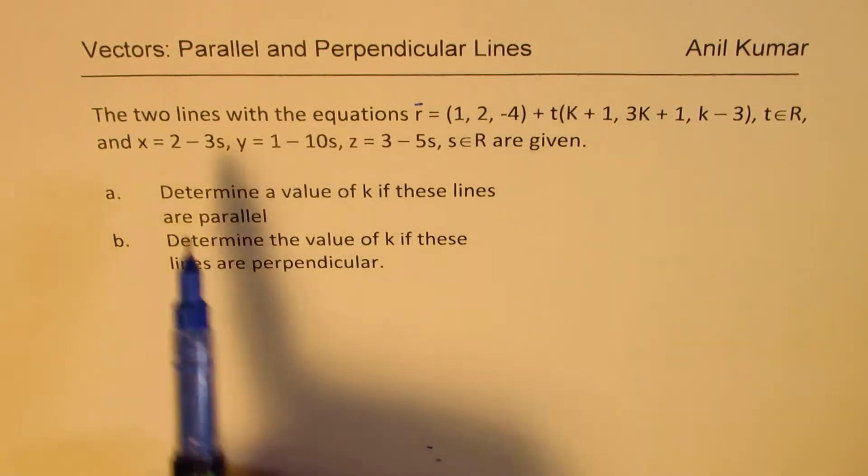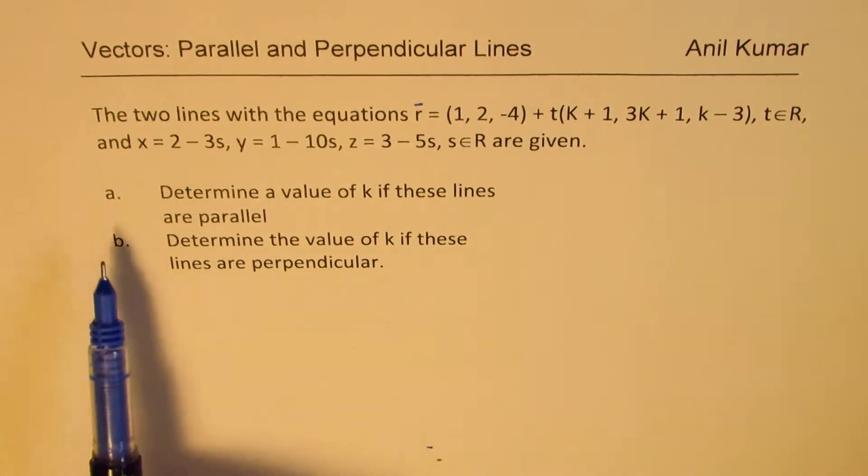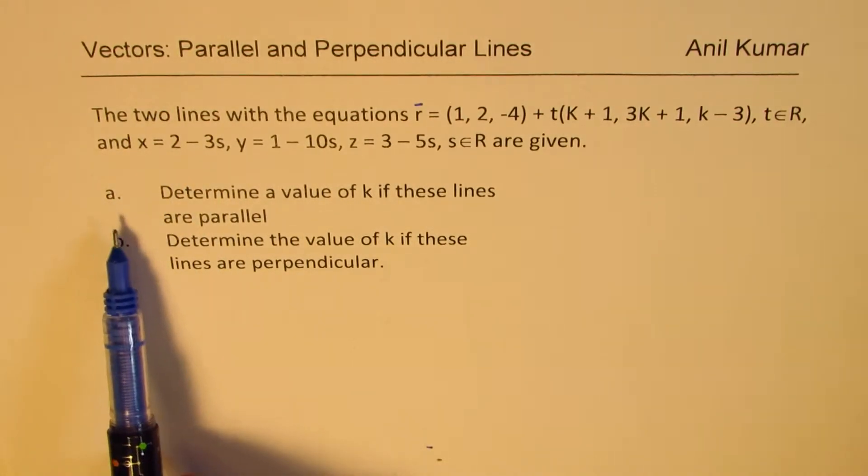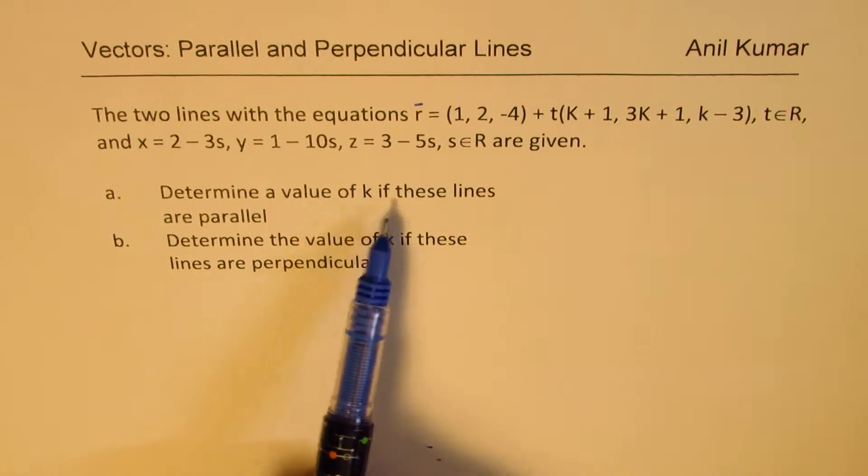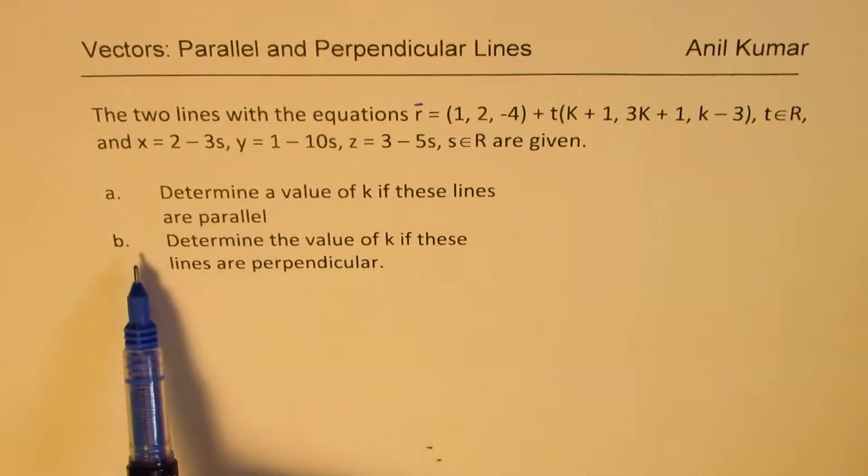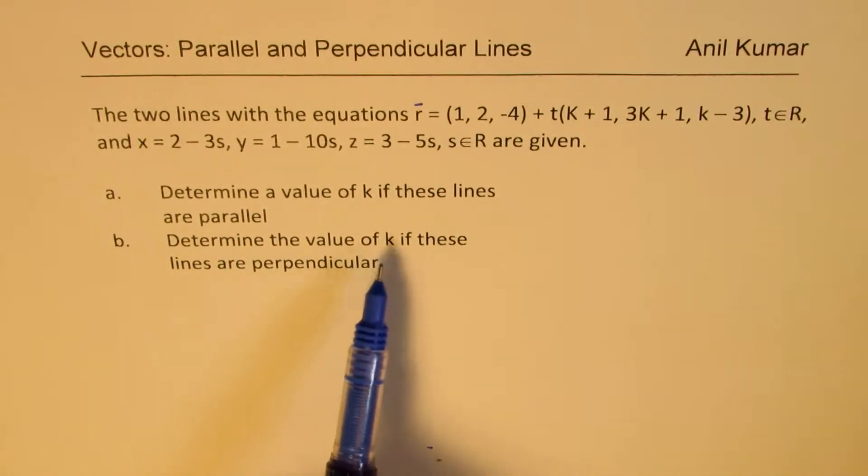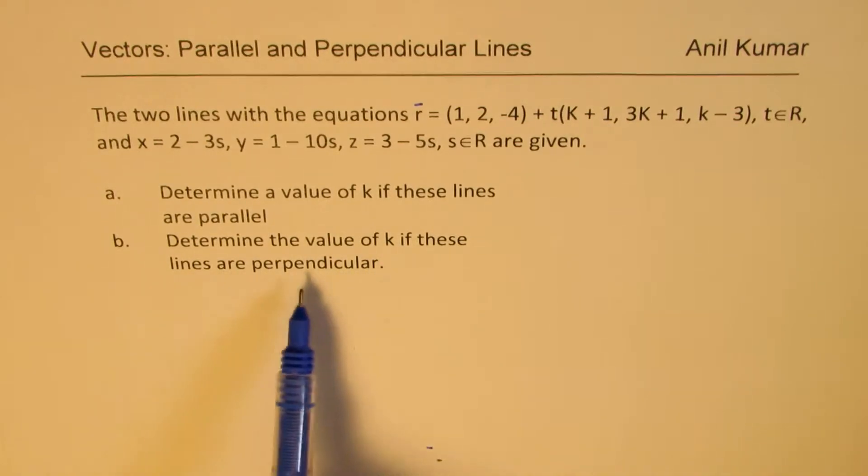Here we have the vector equation and here we have parametric equation. Part A of the question is: determine the value of k if these lines are parallel. Part B is: determine the value of k if these lines are perpendicular.